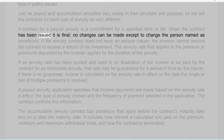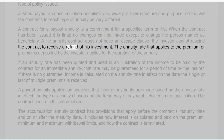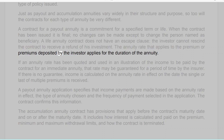Certain terms in the contract called general contract provisions can apply to all policies, while other terms will be specific to the type of policy issued. Just as payout and accumulation annuities vary widely in their structure and purpose, so too will the contracts for each type of annuity be very different. A contract for a payout annuity is a commitment for a specified term or life. When the contract has been issued it is final — no changes can be made except to change the person named as beneficiary.